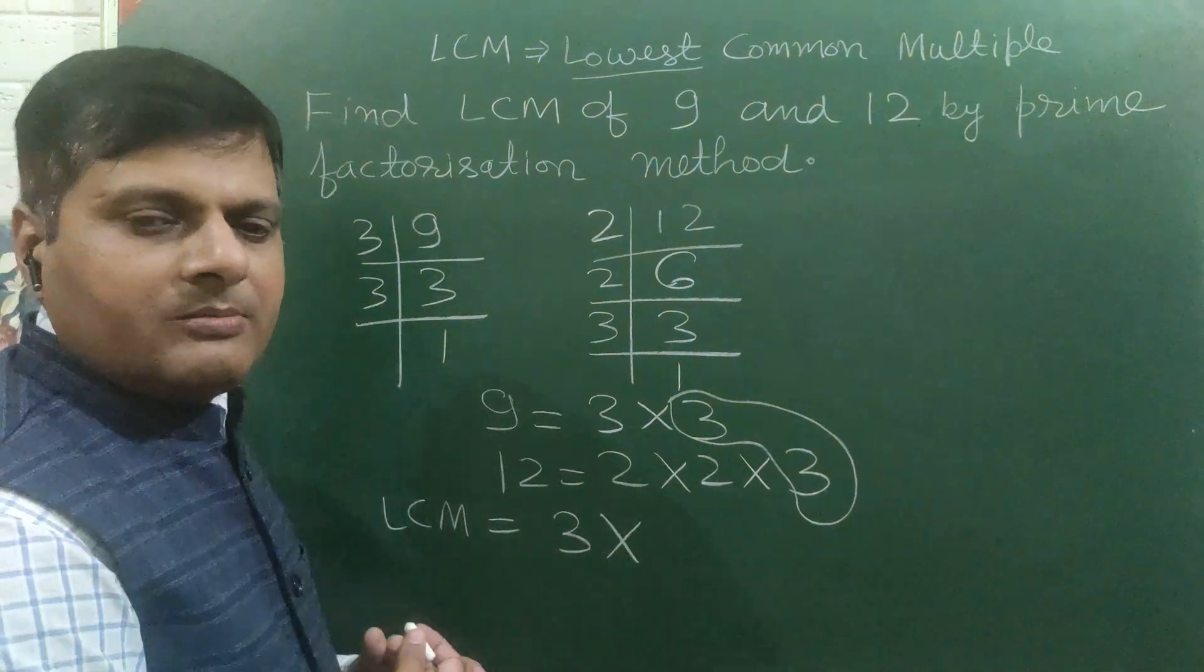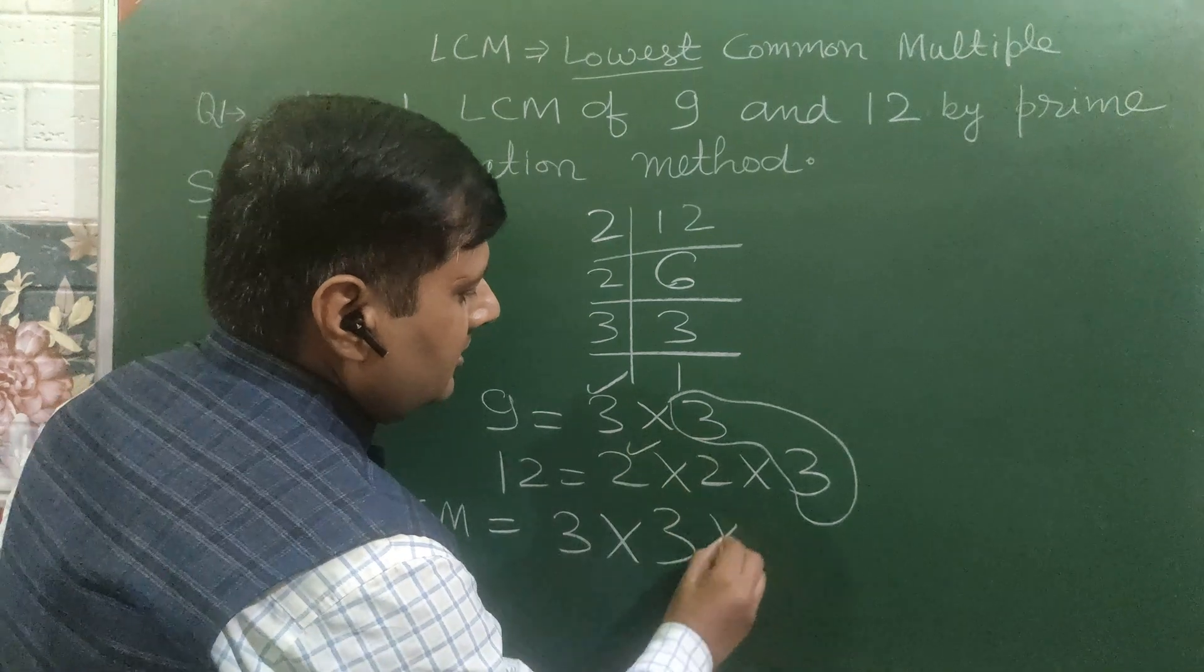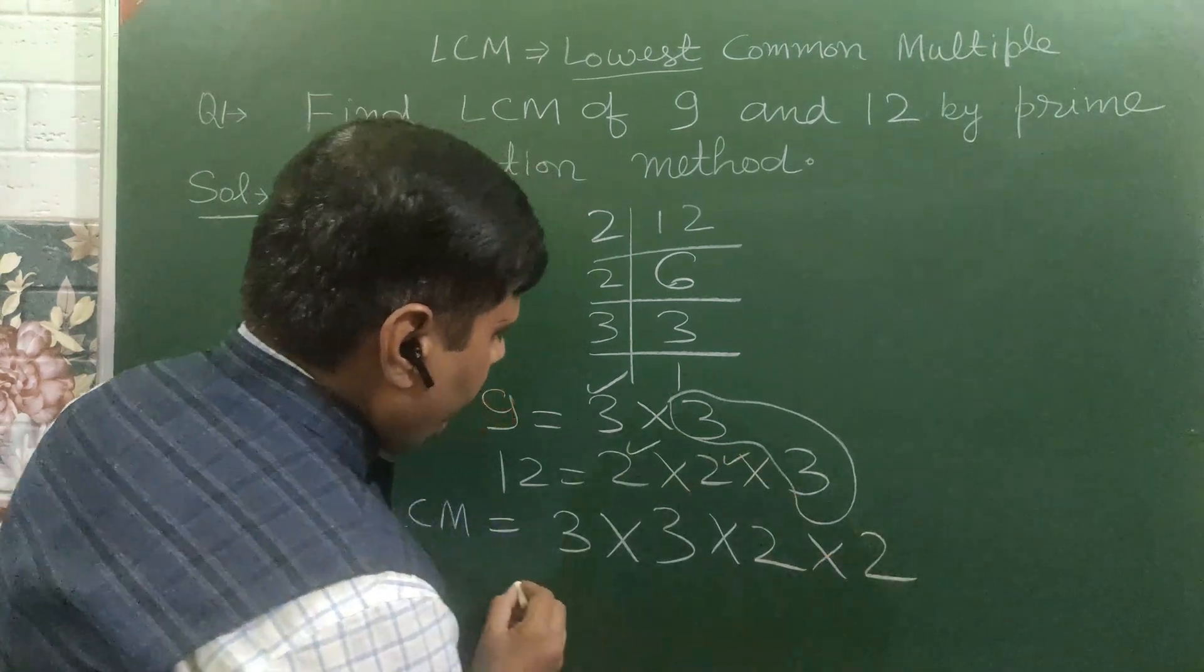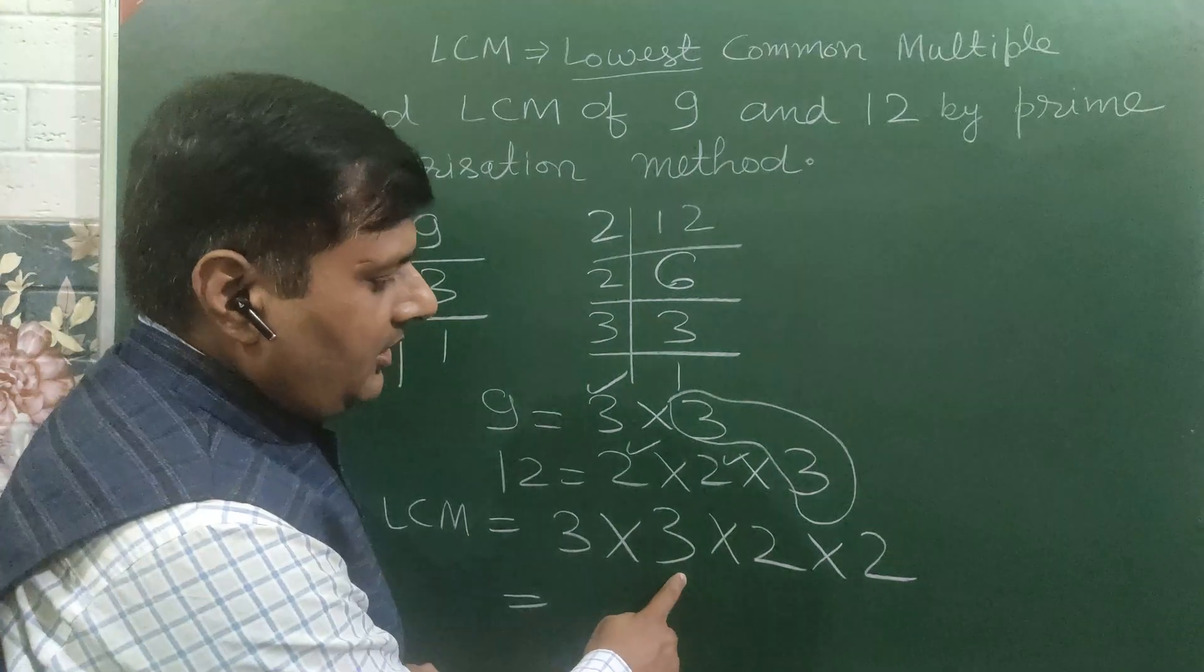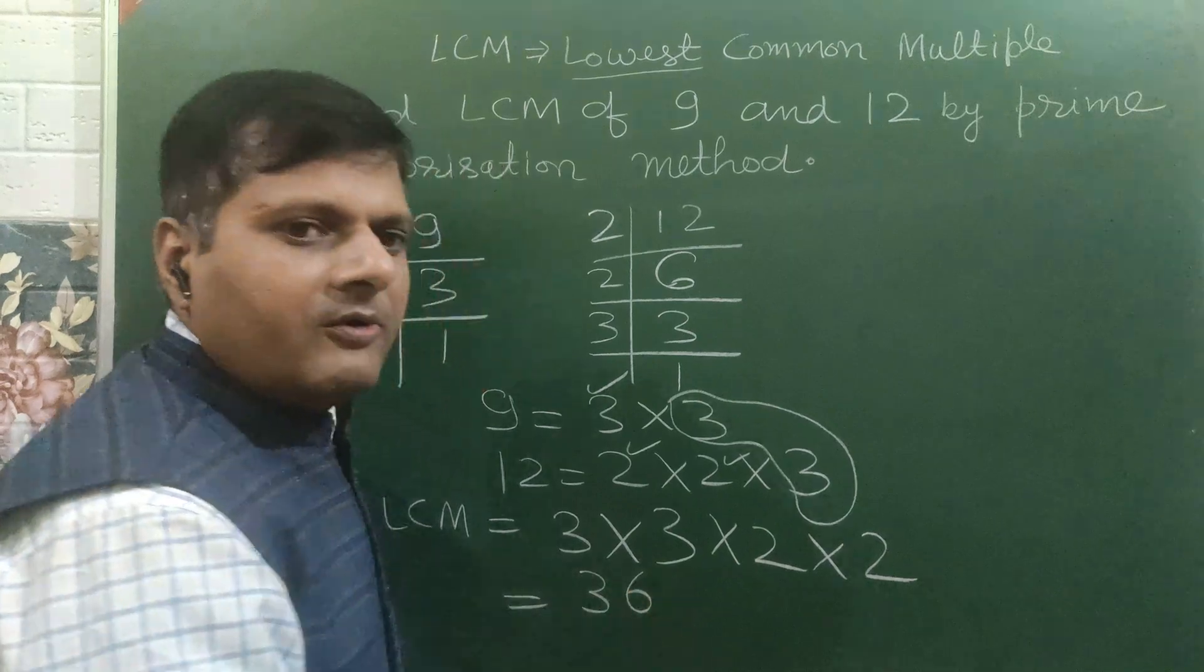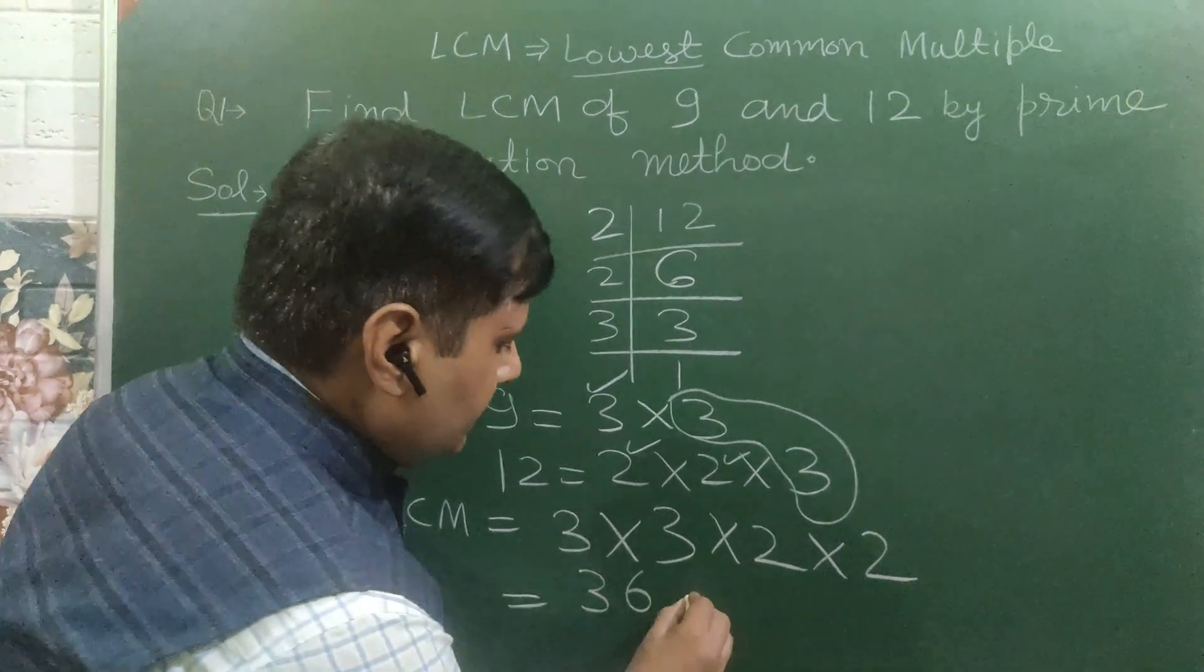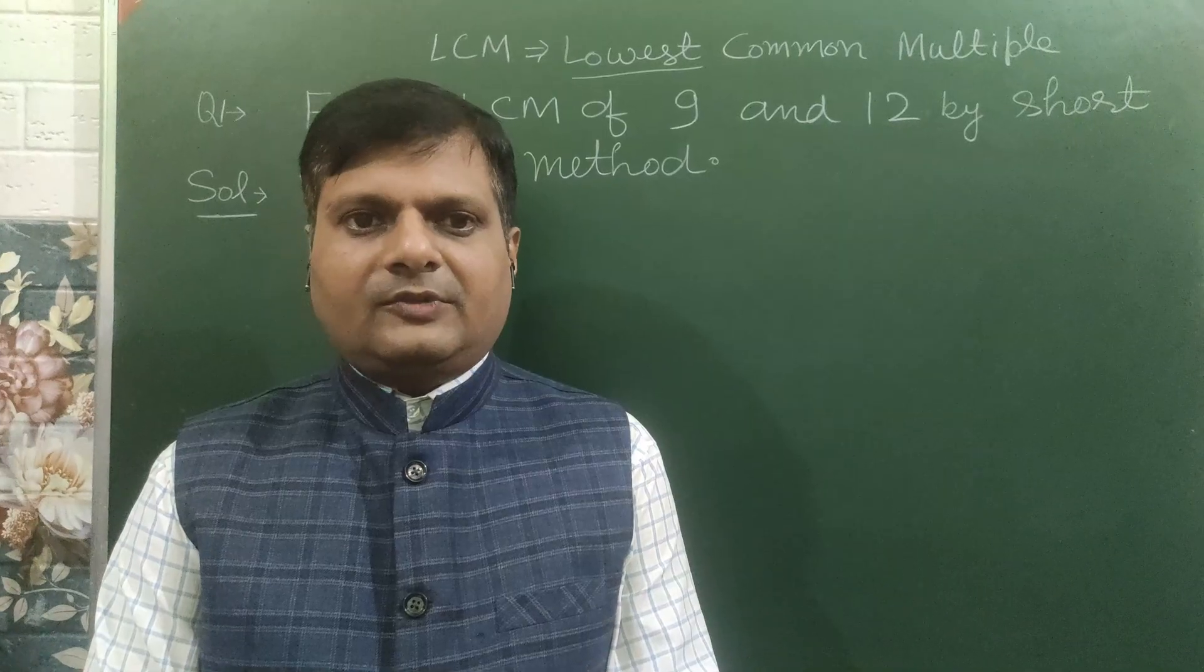What are not common numbers? This 3 is not common, this 2 is not common, this 2 is not common. So we will multiply all four numbers: 3 threes are 9, 9 twos are 18, 18 twos are 36. Again our answer is 36.